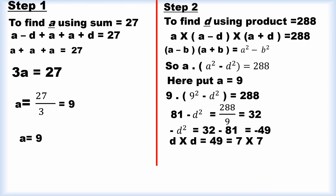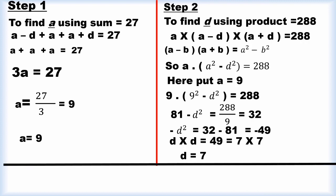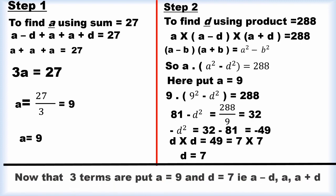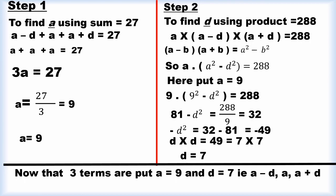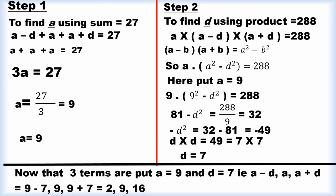Dividing both sides by 9: 81 minus d squared equals 32. So minus d squared equals 32 minus 81, which gives minus d squared equals minus 49, and therefore d squared equals 49, which is 7 times 7. So d equals 7. The three terms are: a minus d equals 9 minus 7 equals 2, a equals 9, and a plus d equals 9 plus 7 equals 16.